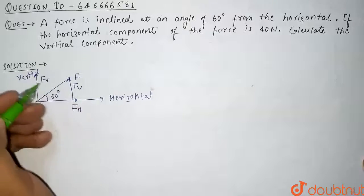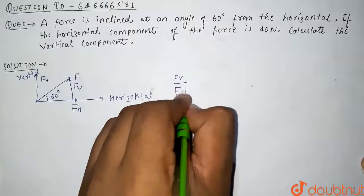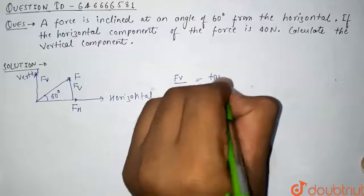So this is our FV, and from here we can write clearly that FV by FH should be equals to tan of 60 degrees.